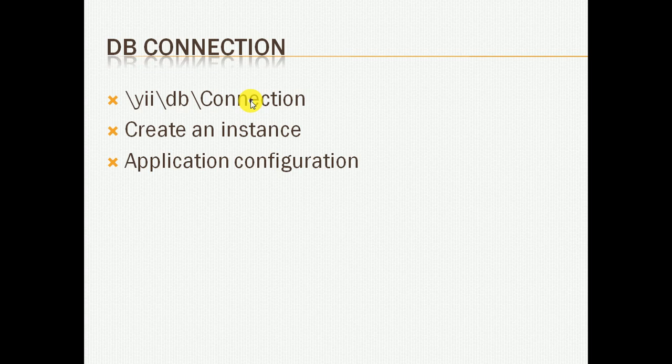Now there are two ways in which you can make a connection. You can instantiate this Connection class and pass the configuration to it, and another way is you can configure that in the application configuration. So let's see how we can do that in both ways.